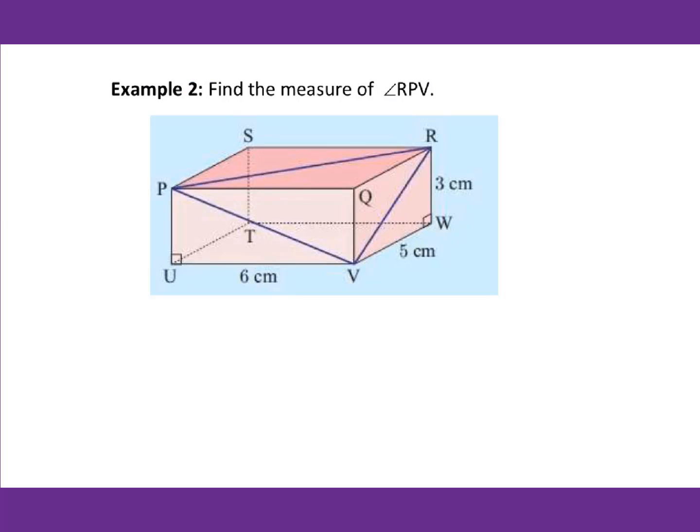Example 2: Find the measure of angle RPV. That means this angle. You are given the size of this rectangular prism. The length equals 6, width equals 5, and height equals 3.